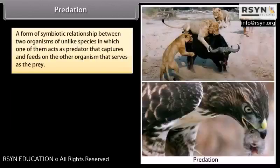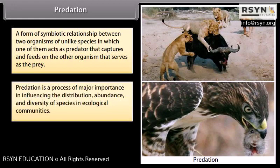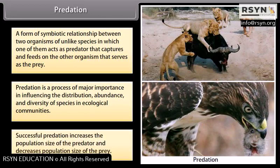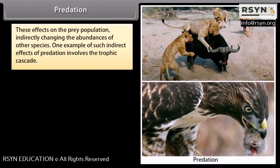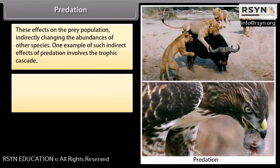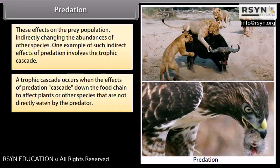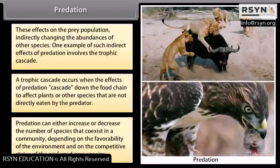Predation is a symbiotic relationship where one organism, the predator, captures and feeds on the other, the prey. Predation is important in influencing the distribution, abundance, and diversity of species in ecological communities. Successful predation increases the predator population and decreases the prey population, which indirectly changes the abundances of other species through trophic cascades. A trophic cascade occurs when effects of predation cascade down the food chain to affect plants or species not directly eaten by the predator.